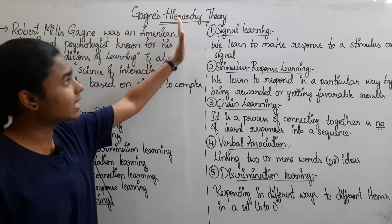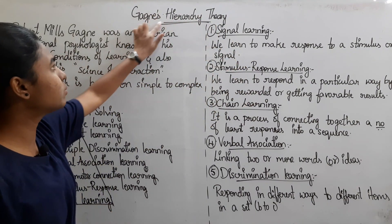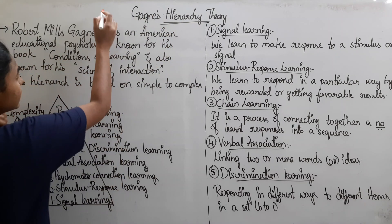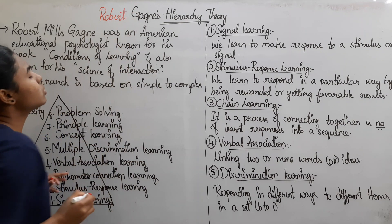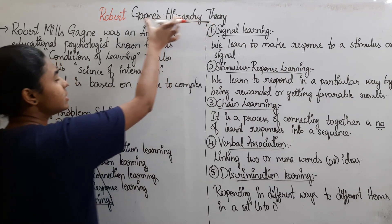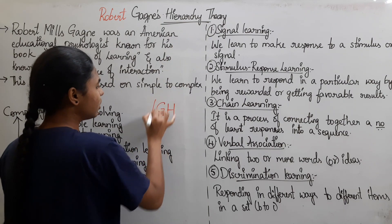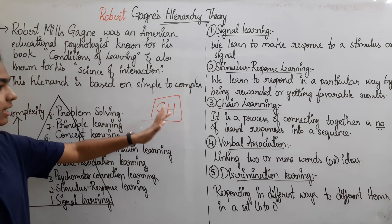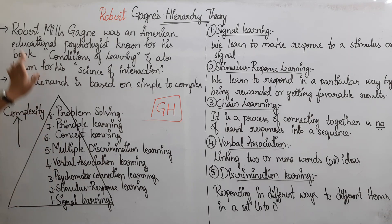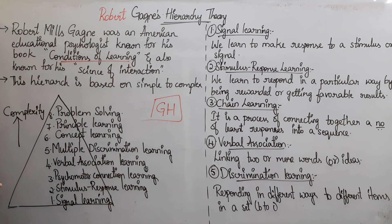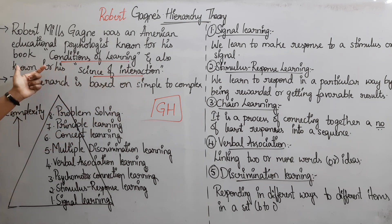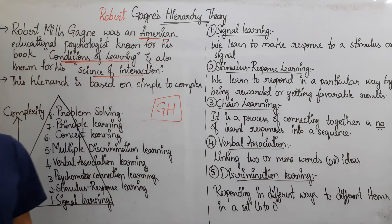Today we are going to talk about Gagne's Hierarchy Theory. Robert Mills Gagne was an American educational psychologist, known for his book 'Conditions of Learning' and also known for his science of instruction.